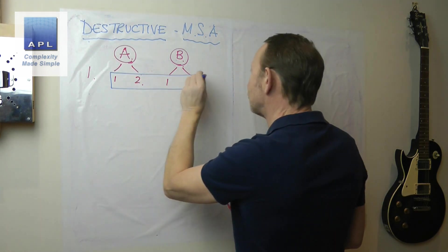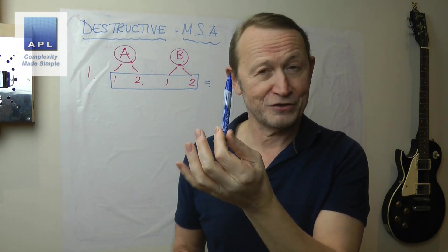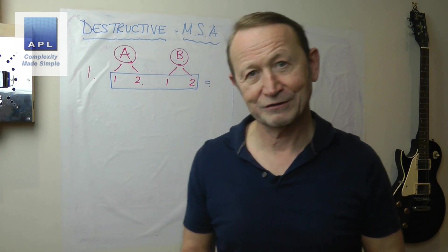Then measurement system B is going to measure the same part twice, so we get two results. And of course when we look across the row, all of those results should be equal. If you measure the same part you should get the same result, in theory.